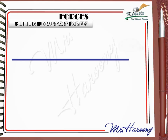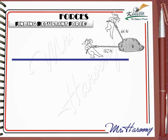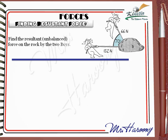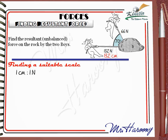Another example describes a big rock pulled by two boys. One pulls with 66 N and the other pulls with 132 N, with an angle of 70 degrees separating the two forces. Find the resultant unbalanced force on the rock. A scale of 1 cm to 1 N gives lines of 132 cm and 66 cm — impossible. So we choose 1 cm to 10 N, making the arrows 13.2 cm and 6.6 cm — suitable lengths.